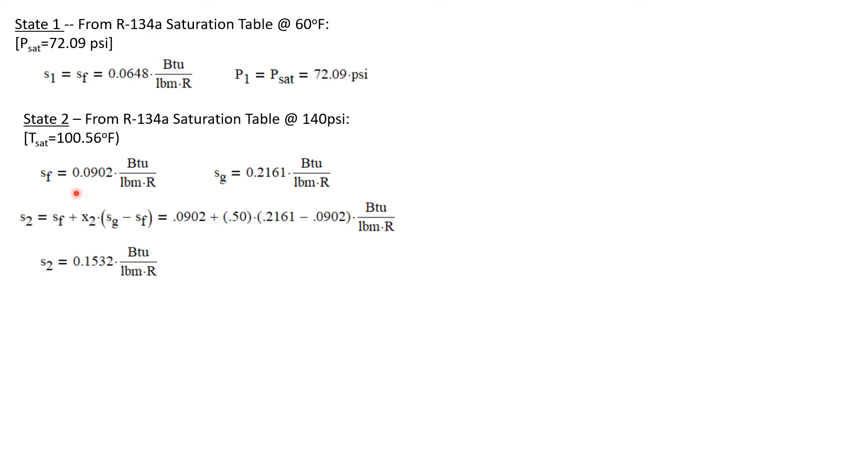We know its quality so we can calculate that the specific entropy at state two is just s_f plus the quality times (s_g minus s_f). Well now we have all of these values and we can calculate that s₂ is 0.1532 Btu/(lbm·R).